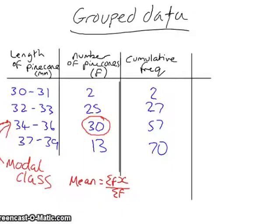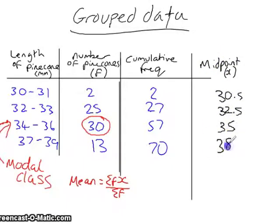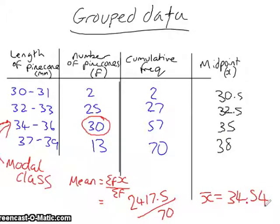To work out the mean, we use the same formula as before, but we use the class midpoints as x. So we get 2417.5 over 70, which comes out as 34.54, which is our mean.